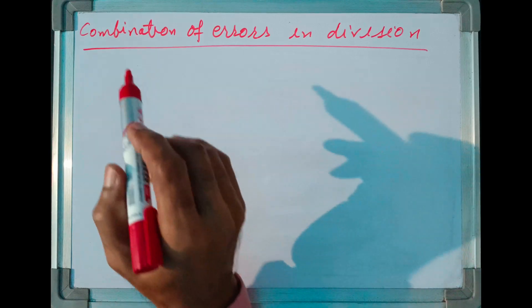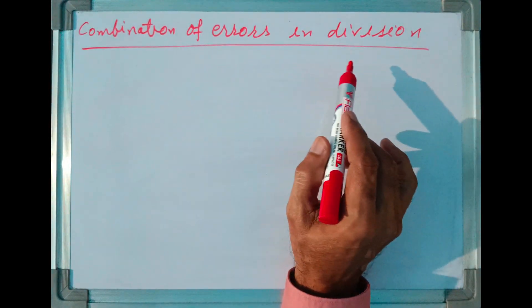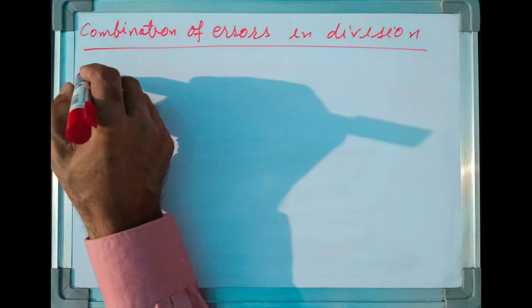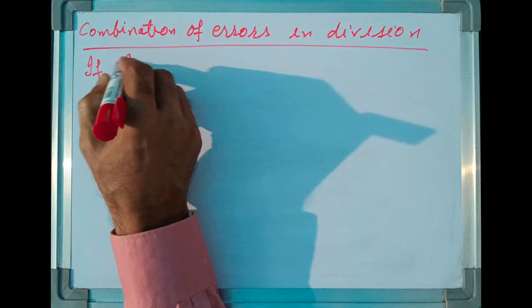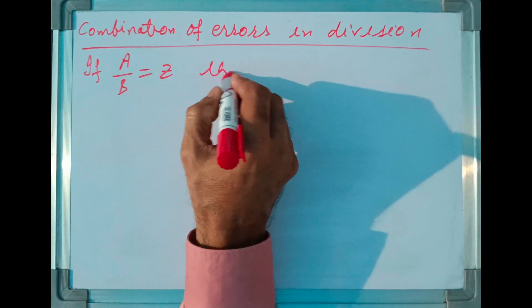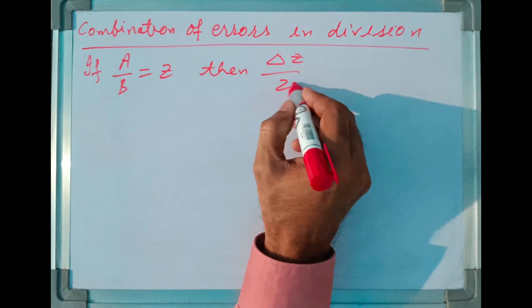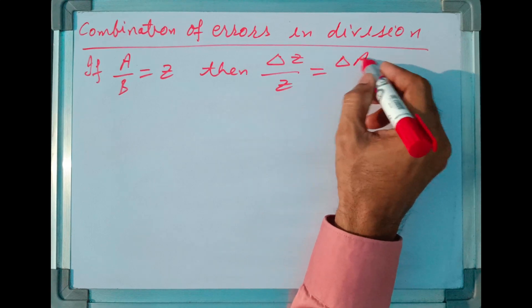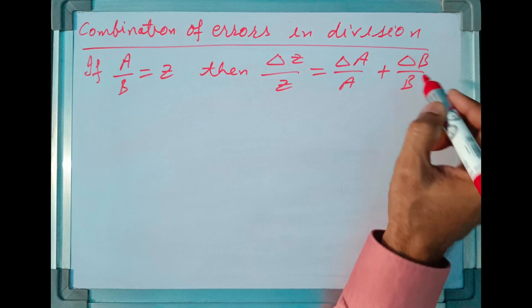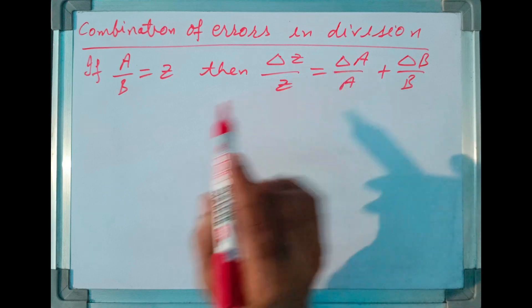In this lecture I will share how errors get combined when we divide two quantities — the rule of combination of errors in division. This rule says if I divide quantity A by quantity B to get result Z, then the relative error in the result is equal to the relative error in quantity A plus the relative error in quantity B. It is the relative errors which get added when we divide two quantities.